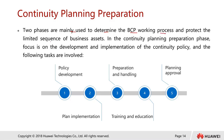Two phases are mainly used to determine the BCP working process and protect the limited sequence of business assets. In the continuity planning preparation phase, focus is on development and implementation of the continuity policy. Tasks involved include policy development — drafting the policy — and plan implementation, which involves a timeline for how you are going to execute the plan.